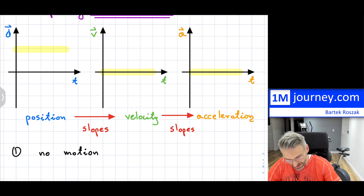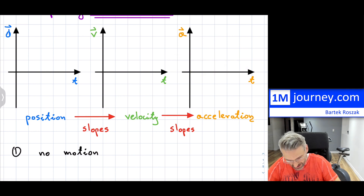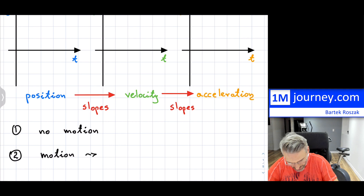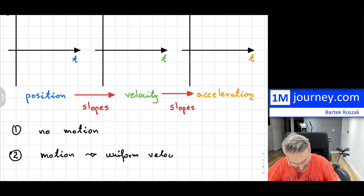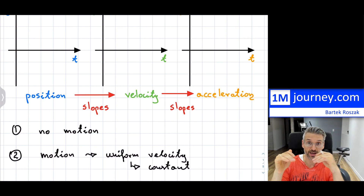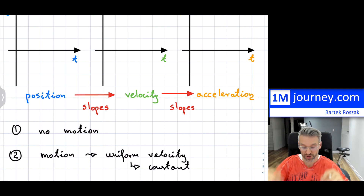The second case: you do have motion, but it is uniform velocity — meaning your velocity is constant and not changing. There is some kind of motion. In this case, what can actually happen? You could possibly be moving in the positive direction with a constant speed or velocity — giving you some kind of positive slope on the position-time graph.